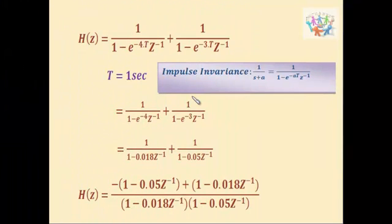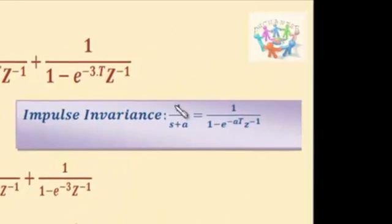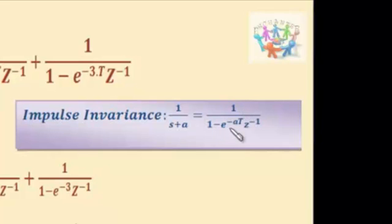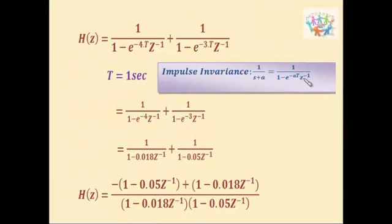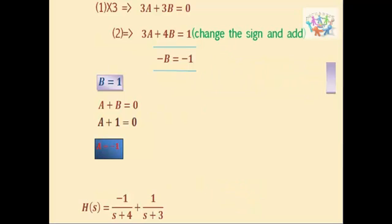Now we can use the impulse invariance method to design the digital filter, for which we have the formula: 1 by s plus a is equal to 1 by 1 minus e to the power minus aT into z inverse. Instead of a, we have 4 and 3.